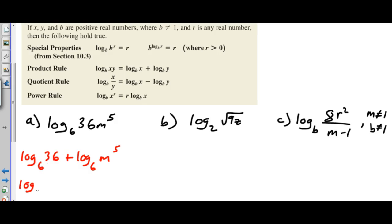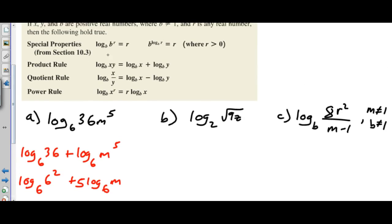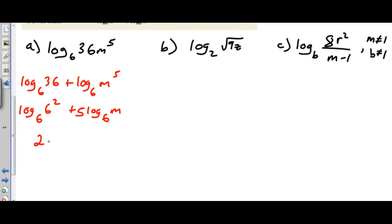Now I can rewrite this as log base 6 of 6 squared, and I can also rewrite this guy. I'm going to move this to the front which is basically the power rule, so I can write that as 5 log base 6 of m. This can now simplify using our special properties from section 10.3, so this is just going to be 2 plus 5 log base 6 of m.